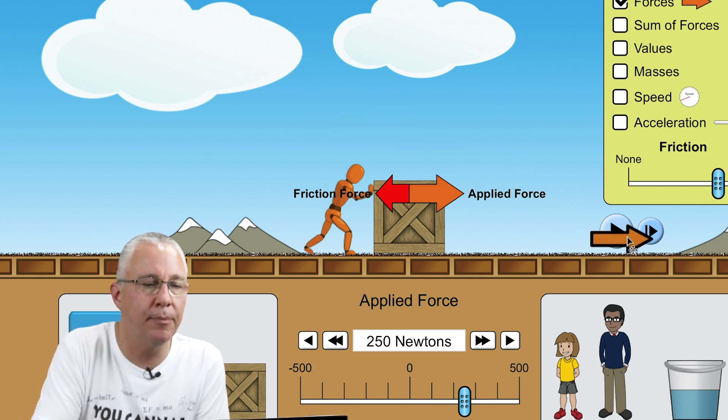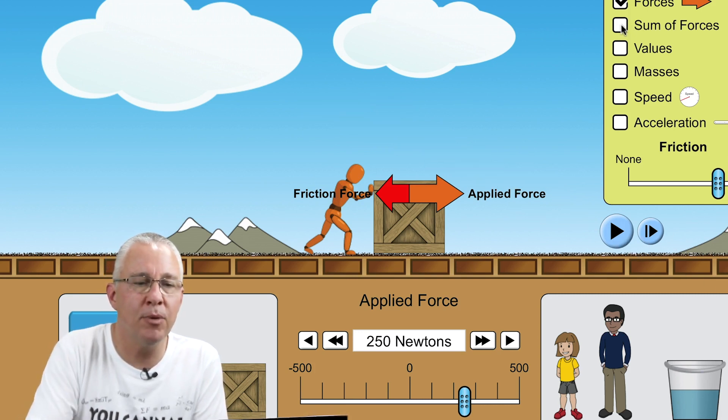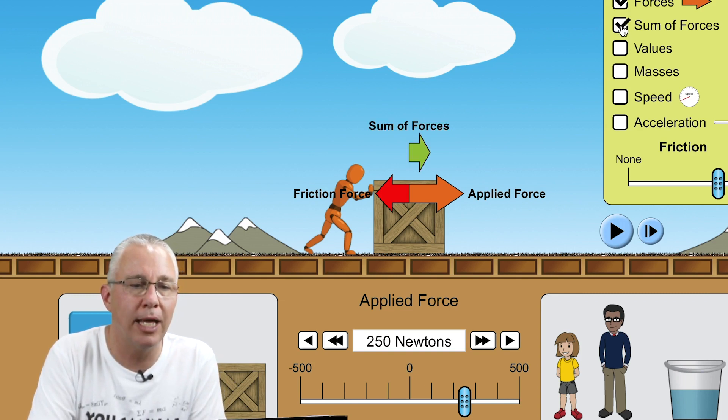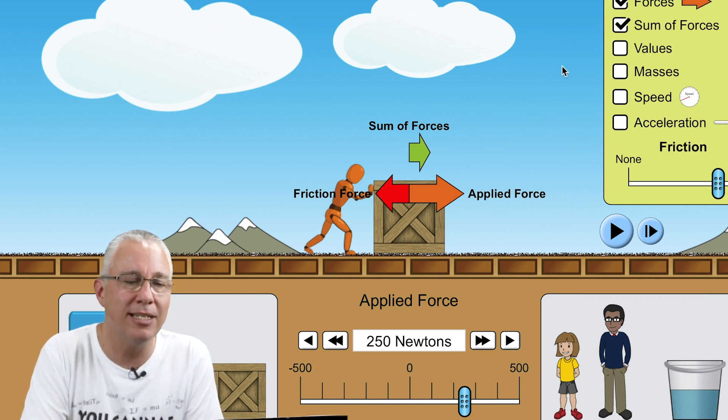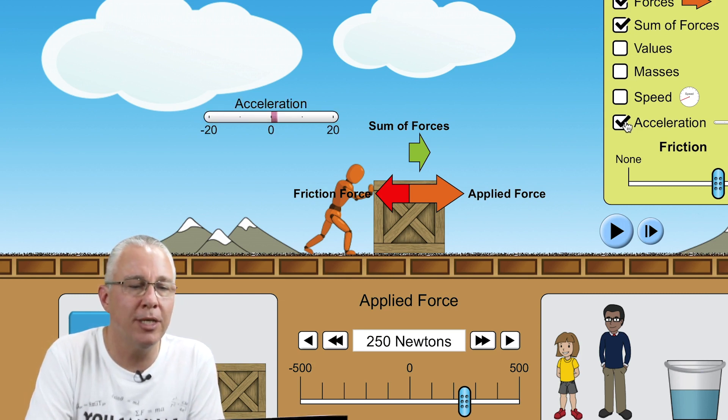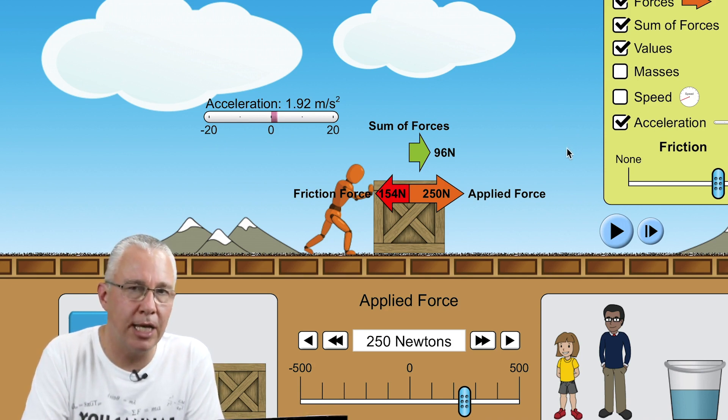So let's examine that a little bit more closely and this time what we're going to do is we're going to add a few things to our little animation. We're going to show the sum of the forces, which is often referred to as the net force. We're also going to show the acceleration because that's what's happening to the block. We're getting some acceleration going on, and then we'll also add our values because I'm going to show you that there is actually a relationship in this situation here.